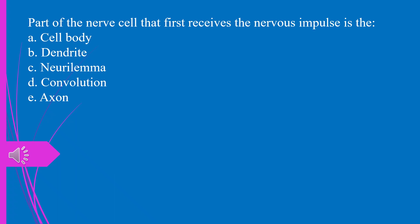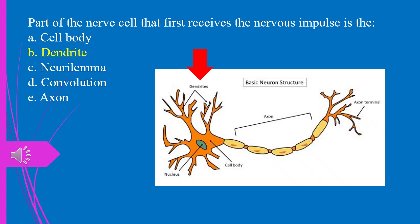Question 16. Part of the nerve cell that first receives the nervous impulse is the: a) cell body, b) dendrite, c) neurolemma, d) convolution, e) axon. The answer is b, dendrite.